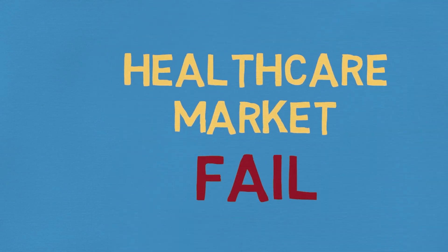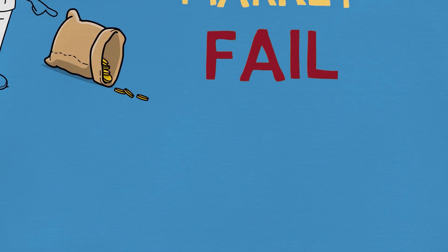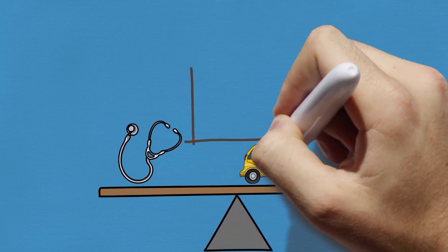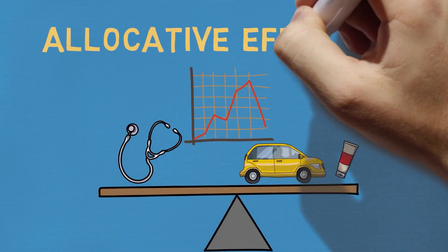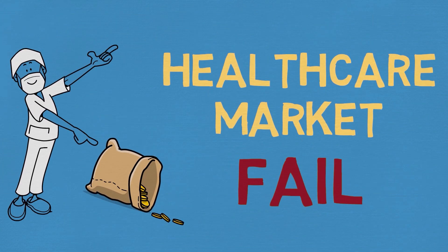Why do healthcare markets fail? How is healthcare different from regular products like cars and toothpaste, where market dynamics translate into what we call allocative efficiency? And what is allocative efficiency? What factors impact on the overall supply and demand for healthcare at a national level? Stick with me, we'll dig into all of this over the next few minutes.